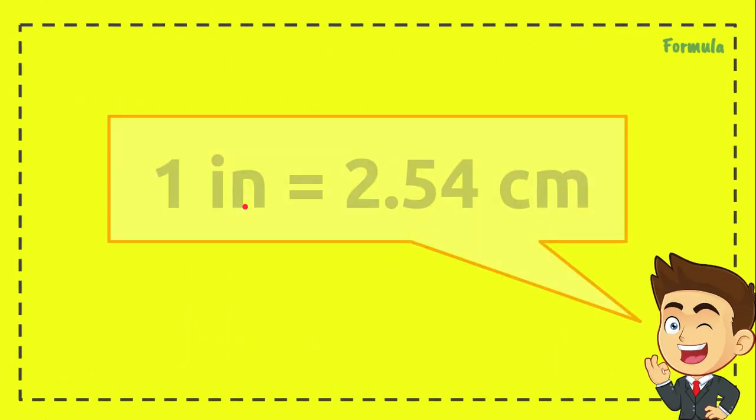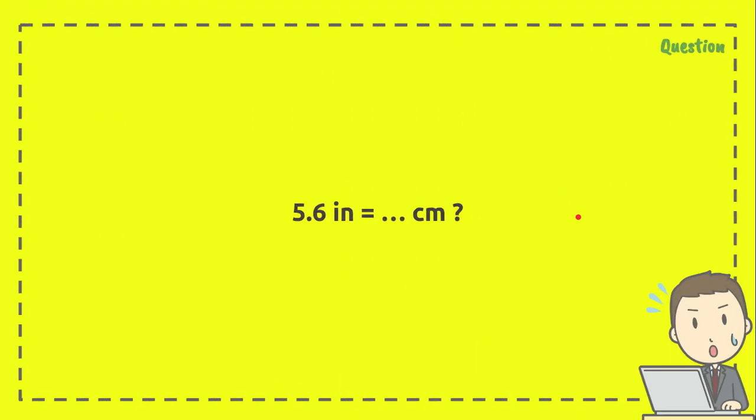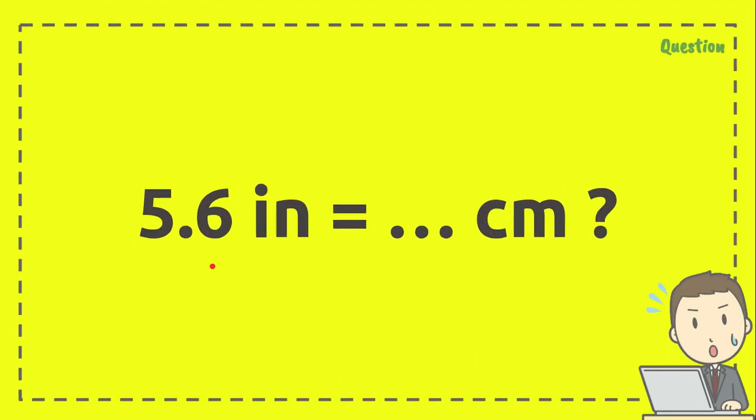Now here's a formula that we are going to use in order to convert inches to centimeter, which is 1 inch equals 2.54 centimeters. And here's a question: 5.6 inches equals how many centimeters?